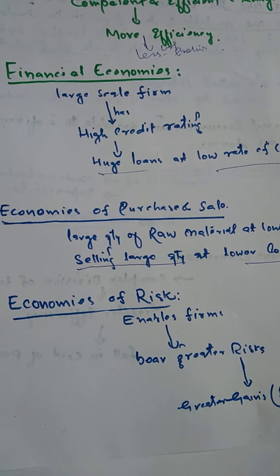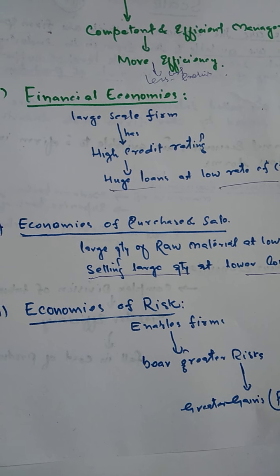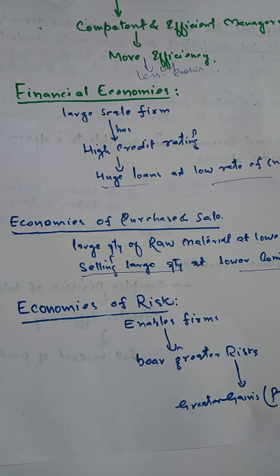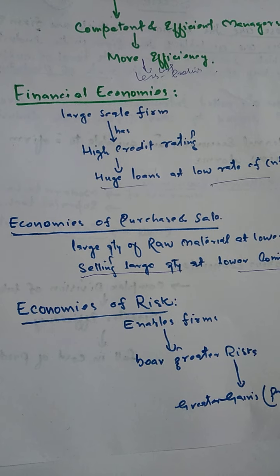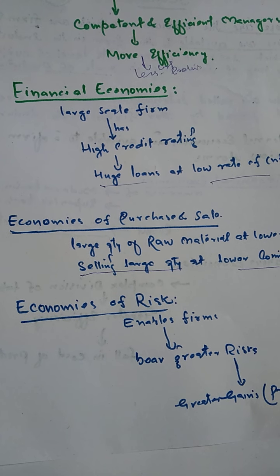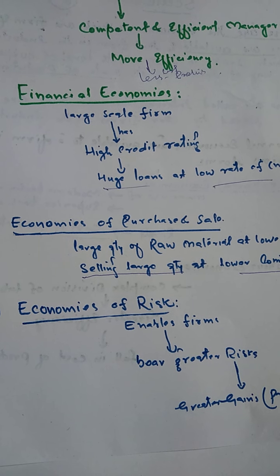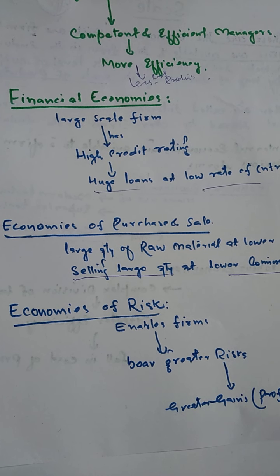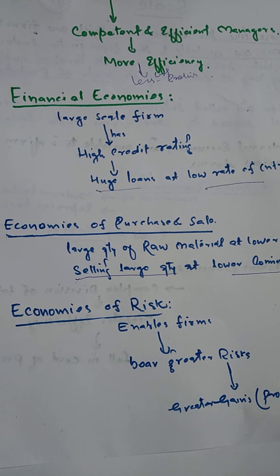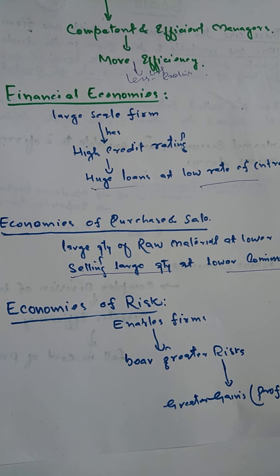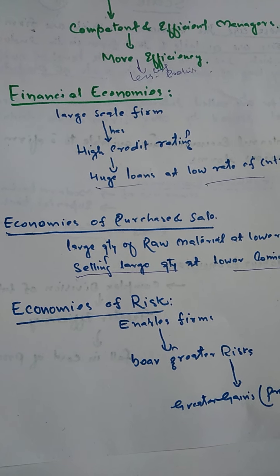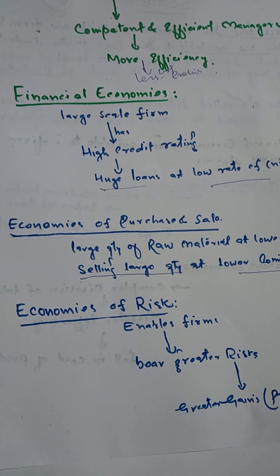So these are some internal economies which are available to a firm in various forms — jo khud ko expand karna chahti hai aur shift from small scale to large scale. Inhe hum internal kehte hain. Is ke ilawa external economies bhi hoti hain which we will discuss in the next lecture. External economies mein faida har firm ko hota hai — poori industry ki sab firms ko. Un mein economies of concentration, information, aur disintegration hain.